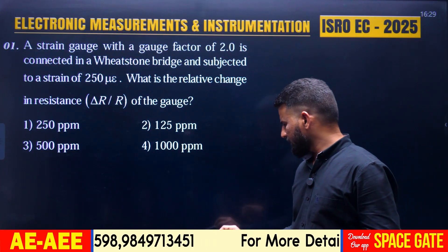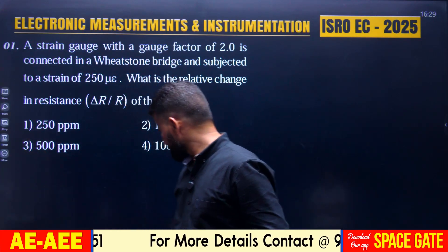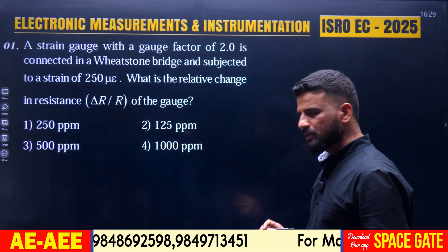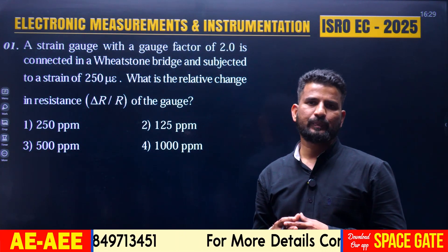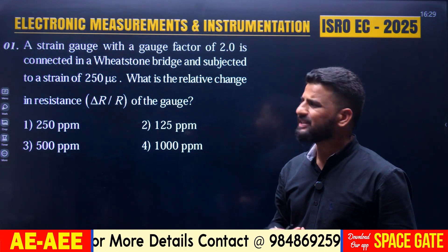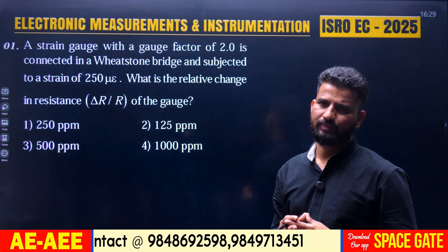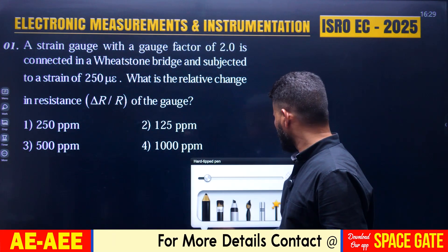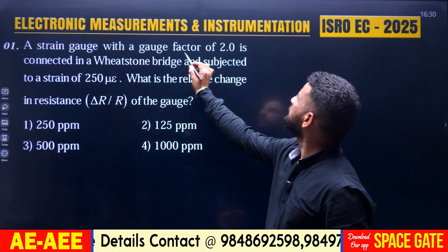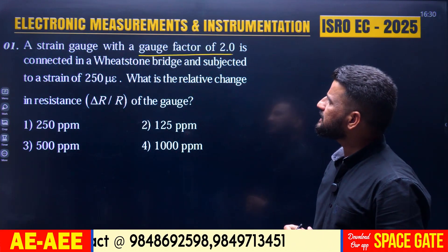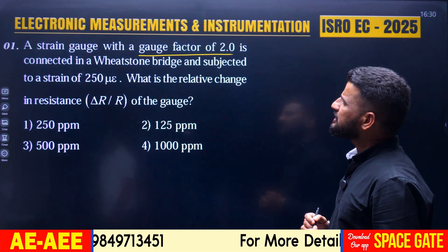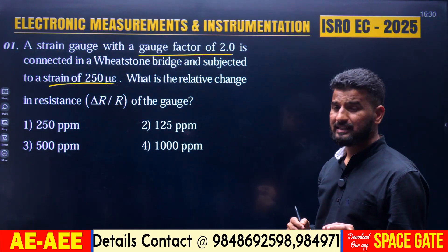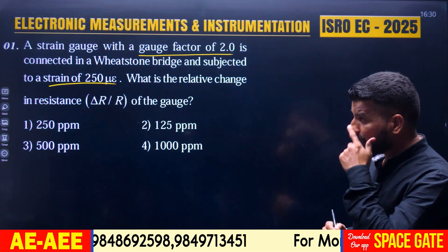Let us look at the first question. We all know the strain gauge — it is used to measure strain or deformation of an object. The deformation or strain calculation can be done using a bridge circuit, with the help of resistance, since a strain gauge is essentially a pure resistance. A strain gauge with a gauge factor of 2.0 is connected in a Wheatstone bridge and subjected to a strain of 250 microstrain. What is the relative change in resistance, delta R by R, of the gauge?